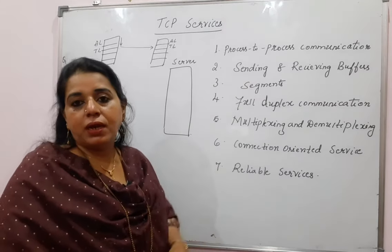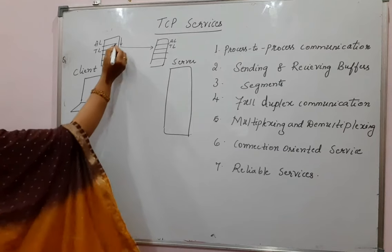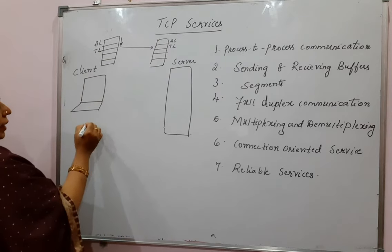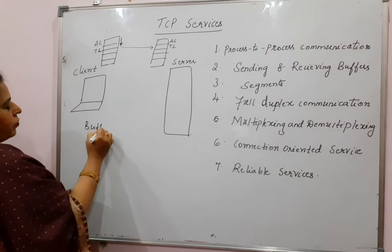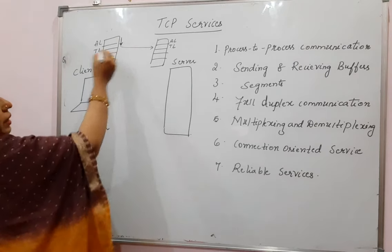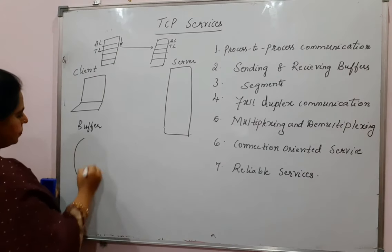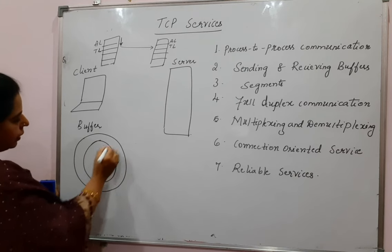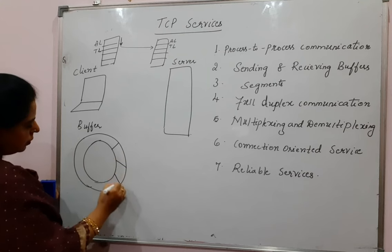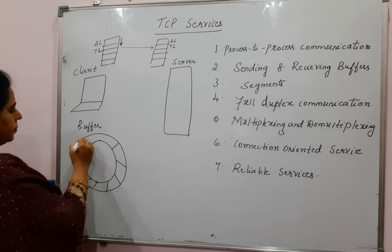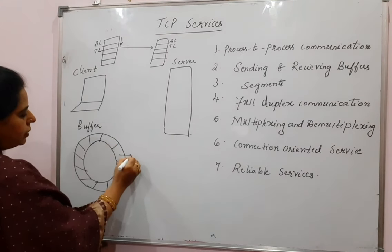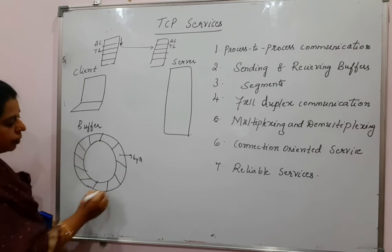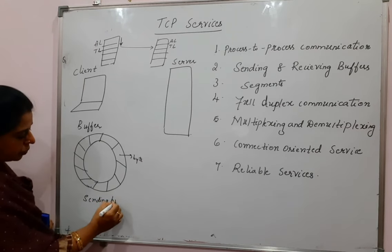One more service included here involves the sender and the receiver. At any point of time, when the application layer is sending data to the transport layer, the transport layer at the client has got a buffer to store all the bytes it is receiving from the application layer. This buffer can be shown as a circular array, where each location in the array is storing a byte. This is called the sending buffer.